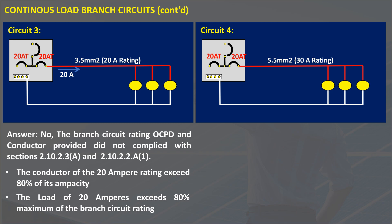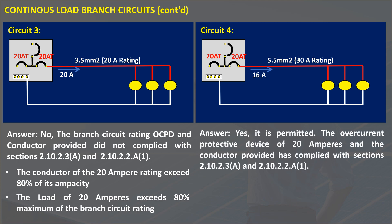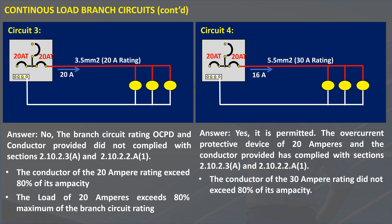Next is circuit 4. A 16 amperes continuous load is connected to a circuit rated at 20 amperes. The conductor provided is rated at 30 amperes, as shown. Is this circuit compliant with the code? Yes, it is permitted. The overcurrent protective device of 20 amperes and the conductor provided has complied with Sections 2.10.2.3 A and 2.10.2.2 A1. The conductor of the 30 amperes rating did not exceed 80% of its ampacity, and the rating of the circuit is 20 amperes, not 30 amperes. However, this circuit must only be loaded by 16 amperes maximum.